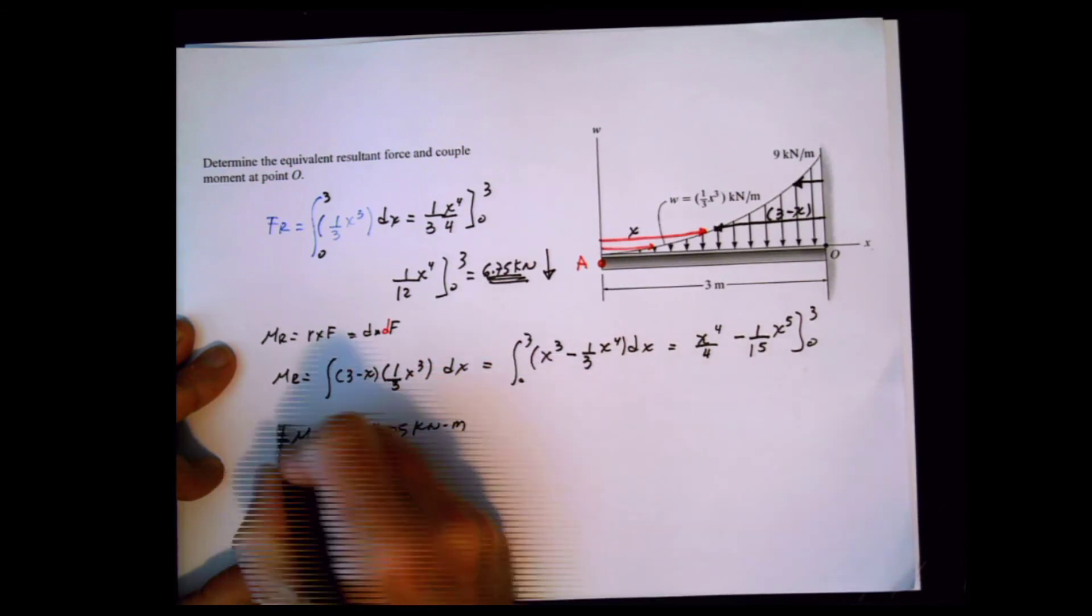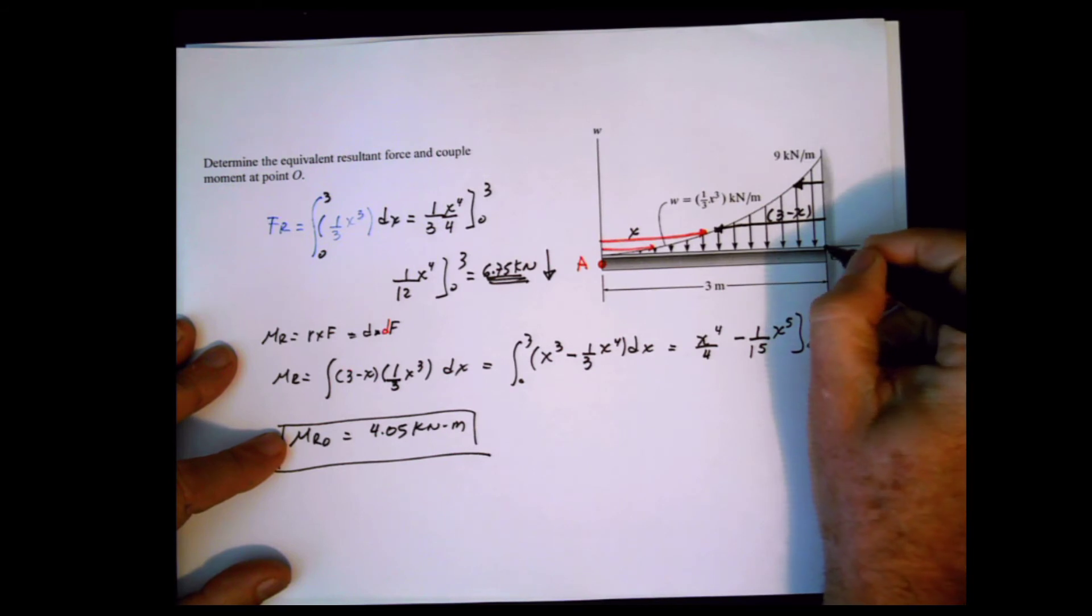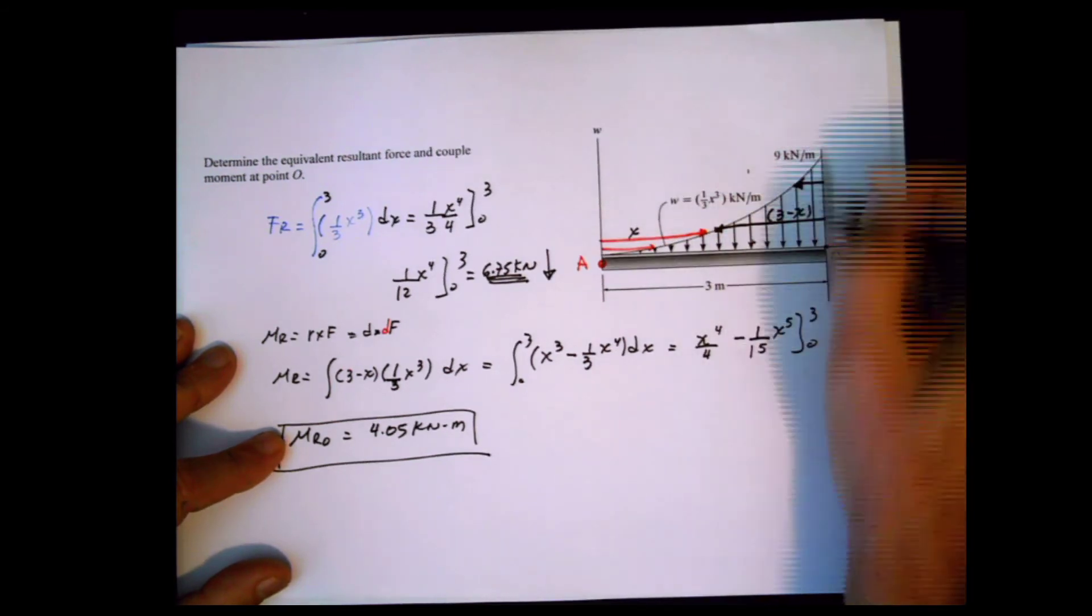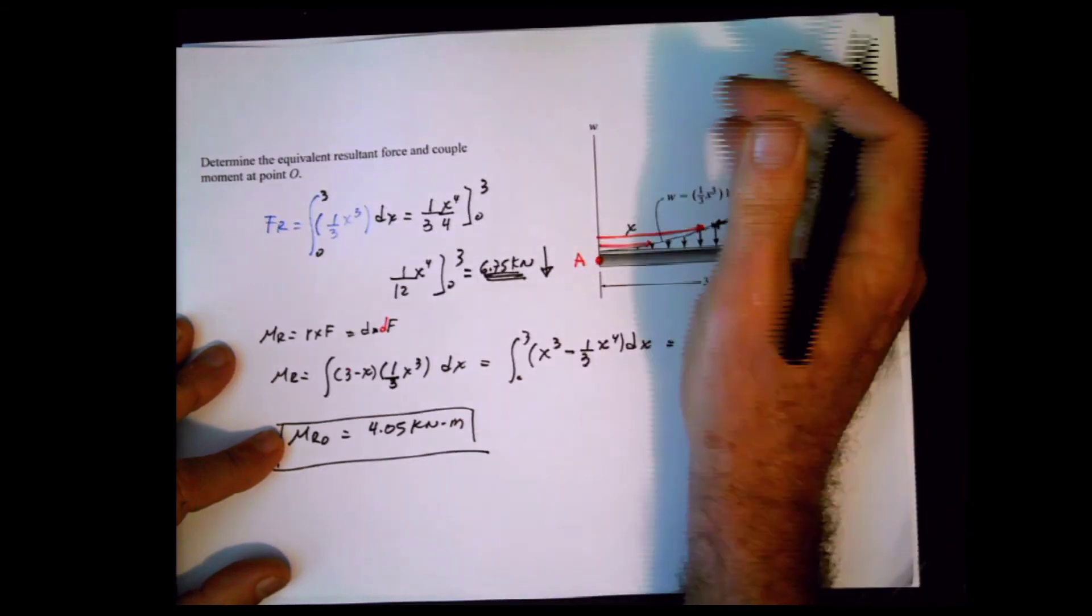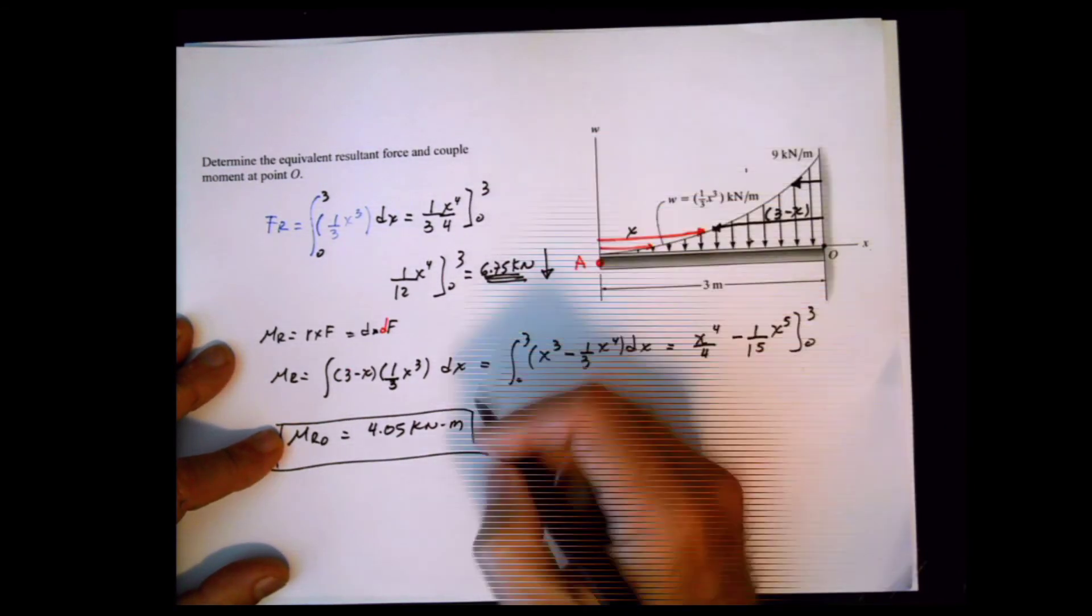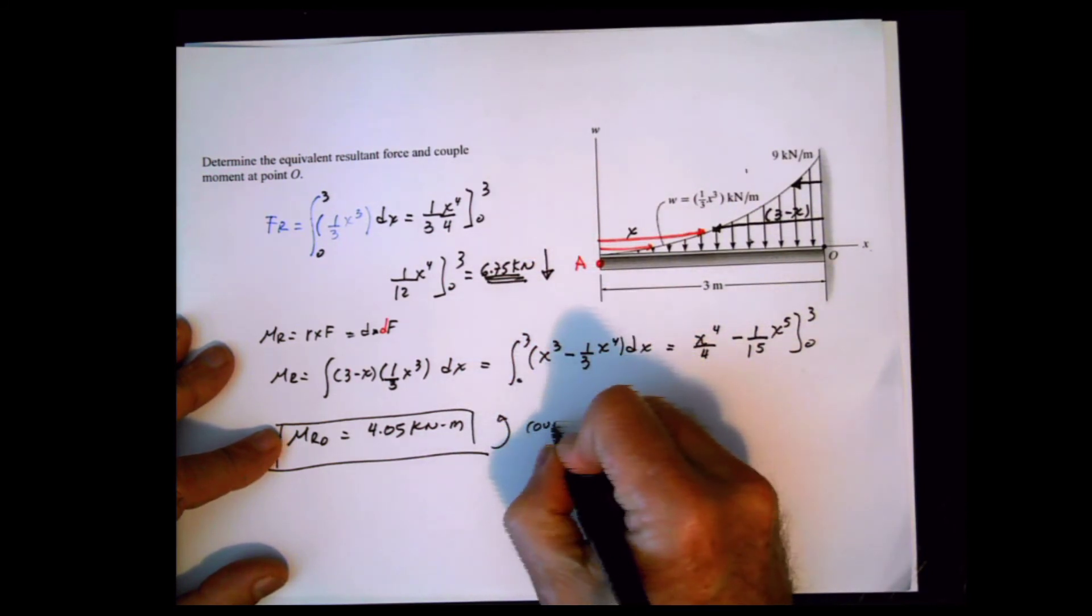In the same way as before, if the force acts downward at this distance, the produced moment is in the counterclockwise direction.